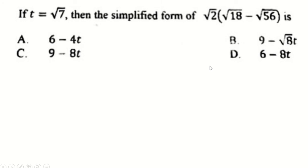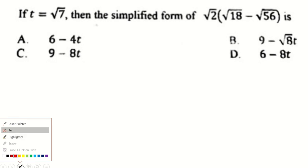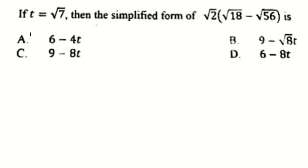Hello everyone, here is the second video solving the Grade 8 national exam of the current year 2021. For today, the first question: if t equals radical 7, then find the simplified form of root 2 times, in bracket, radical 18 minus radical 56.